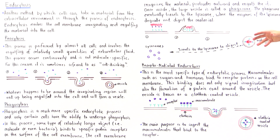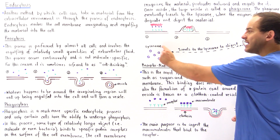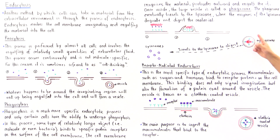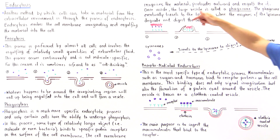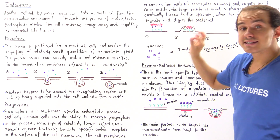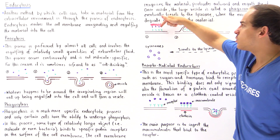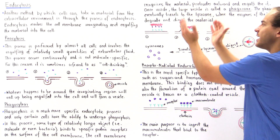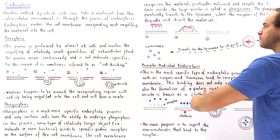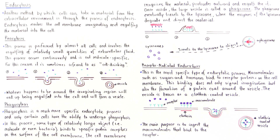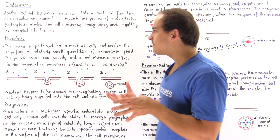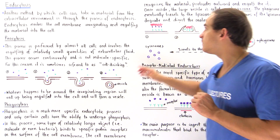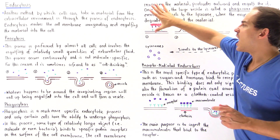Once engulfed, the resulting vesicle — which is larger — is known as the phagosome. The phagosome eventually fuses with the lysosome, which contains special hydrolytic enzymes that degrade and digest the material. For example, a bacterial cell contains receptors shown in purple; when these bind to the cell membrane receptors, that signals invagination. The membrane protrudes and pushes inward to form the phagosome. Unlike pinocytosis, this is a specific process involving protein receptors on both the cell membrane and the engulfed object.